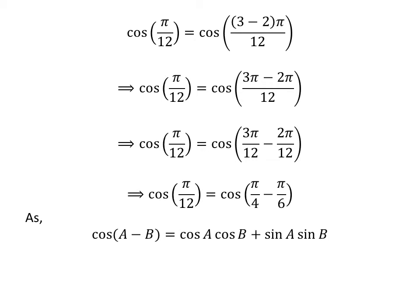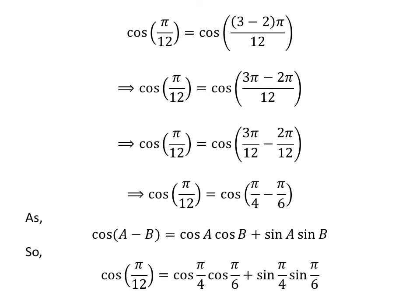We know the famous trigonometry identity: cosine of a minus b is equal to cosine of a times cosine of b plus sine of a times sine of b. Applying this identity gives us cosine of pi upon 12 is equal to cosine of pi upon 4 times cosine of pi upon 6 plus sine of pi upon 4 times sine of pi upon 6.